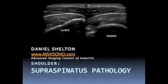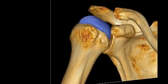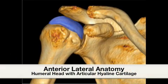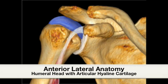This is a brief introduction to supraspinatus pathology. We will begin by describing the bony anatomy covered by the articular hyaline cartilage shown here in blue.